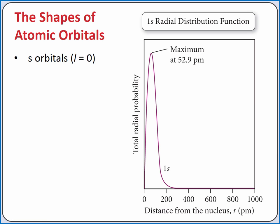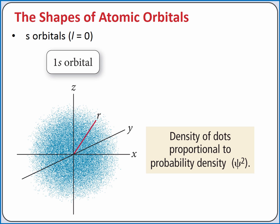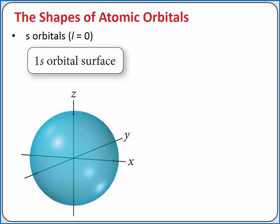The shape of an orbital is the volume that encompasses 90% of the probability of the electron's location. For the 1s orbital, the electron is most likely to be found near the nucleus, with the probability dropping off as distance from the nucleus increases. If we plot the probability on a three-dimensional graph, we can visually infer where the electron is likely to be found. The shape that encompasses 90% of this probability is a sphere.